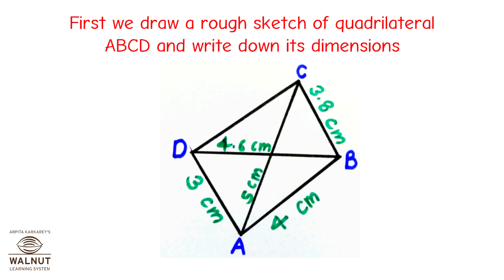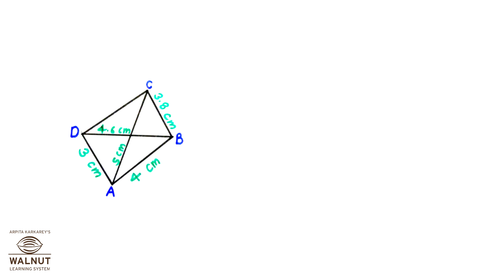From the rough sketch, you can see that there are two triangles which we can construct using the SSS construction method: Triangle DAB and Triangle CBA. Let's do it!